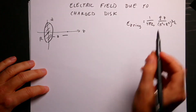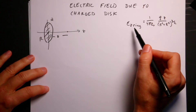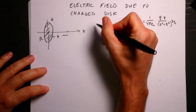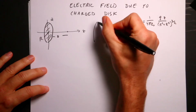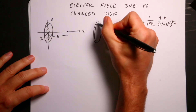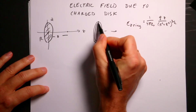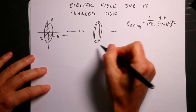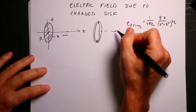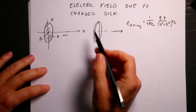Before I had this — the electric field due to a ring in the Z direction. If I just have a single ring and I'm on this axis, the electric field due to the piece up here and the piece down here cancel in the XY plane, and so you only get an electric field in the Z direction.